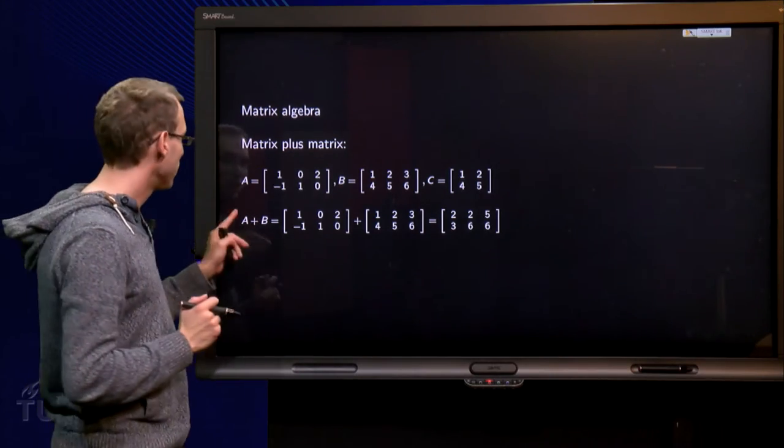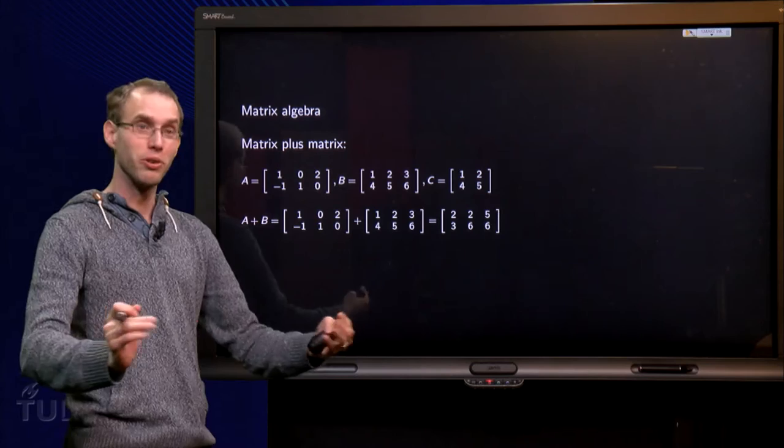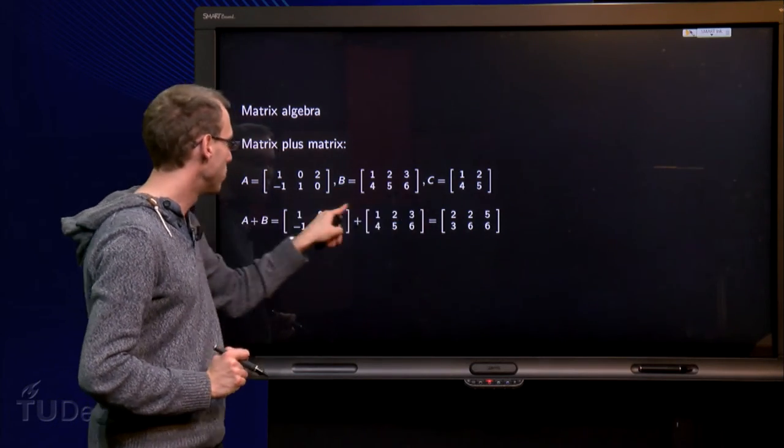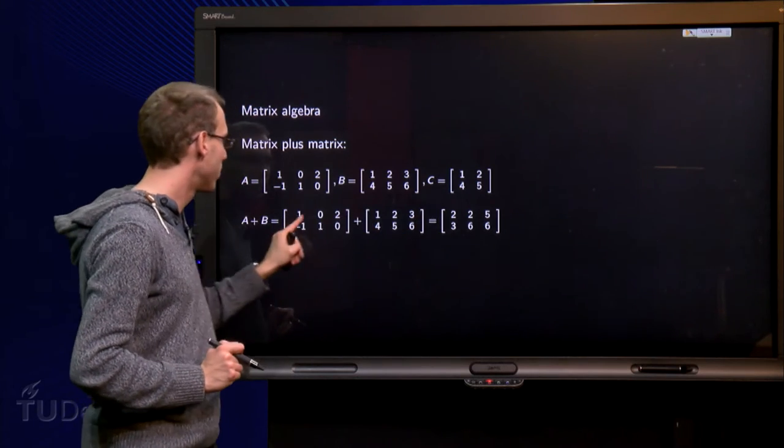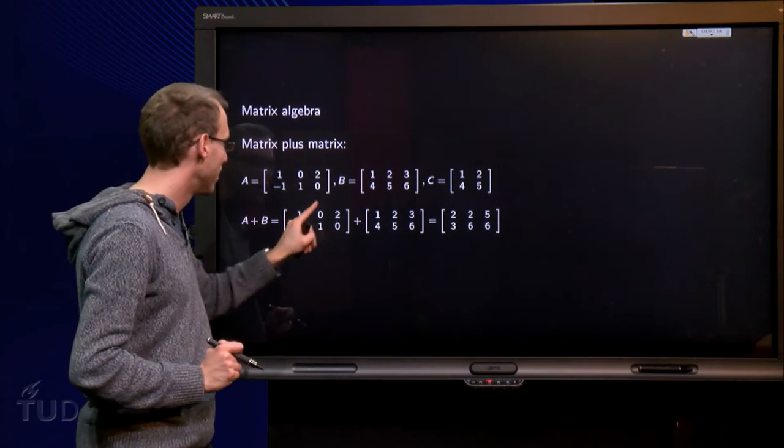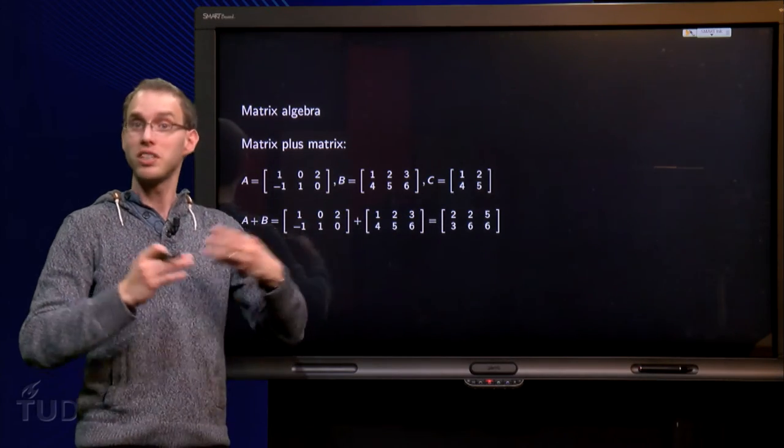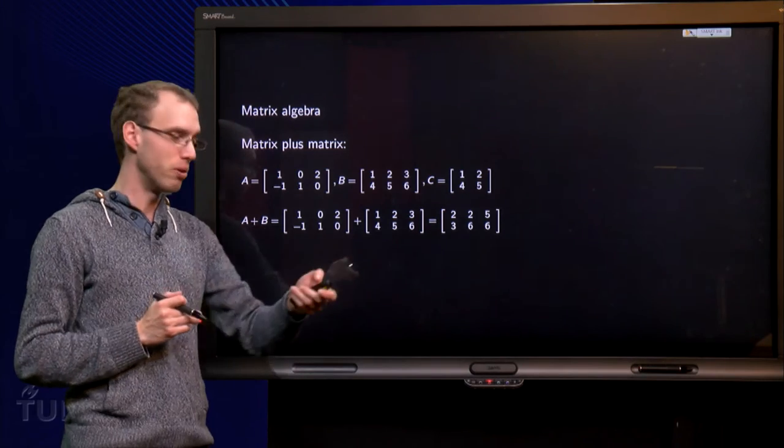How can you compute A plus B? Well, just add all the numbers. 1 plus 1 equals 2, 0 plus 2 equals 2, 2 plus 3 equals 5, minus 1 plus 4 equals 3, 1 plus 5 equals 6, and 0 plus 6 equals 6. So that is how you add two matrices, add all components.